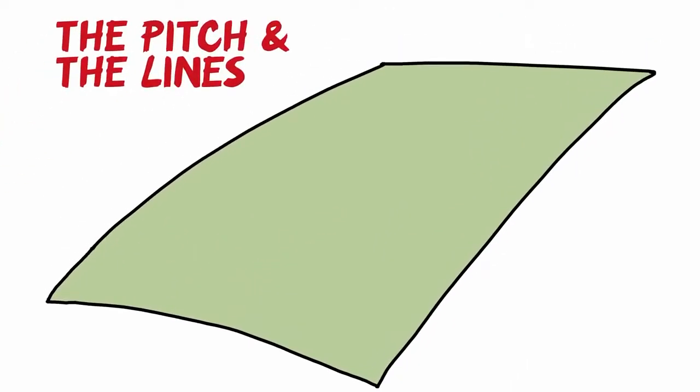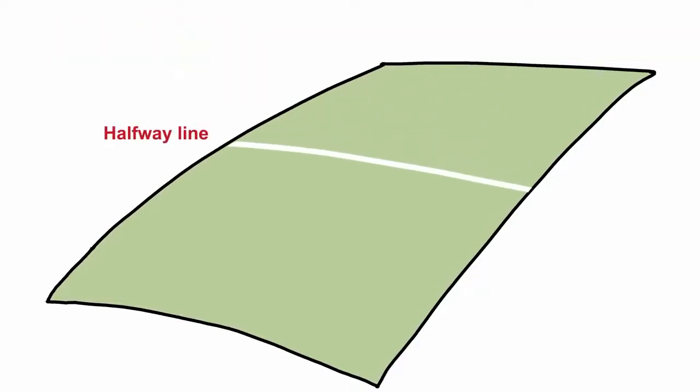We start from the halfway line. From this line the game is started or restarted after a score. Next is the 10 metre line. After the kick-off the ball must cross this line.